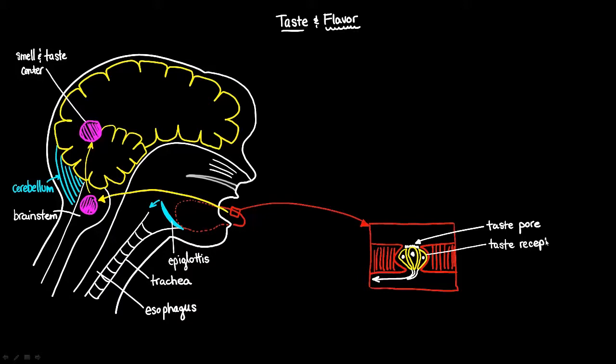And there are receptors for a bunch of different tastes. Everyone is pretty much in agreement about sweet. There are receptors for sweet, sour, salt, bitter, and a fifth one called umami, which is sort of savory flavors.